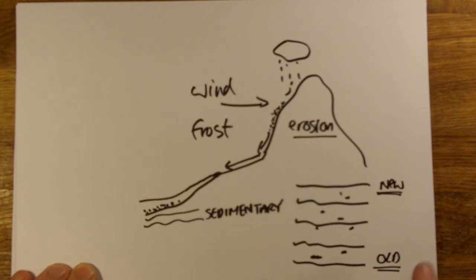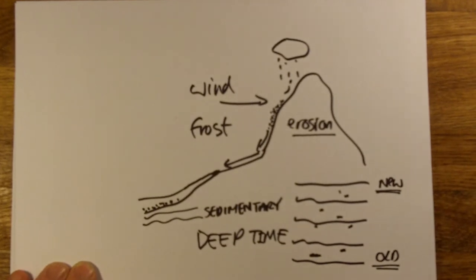This age of millions of years over which these layers of sediment formed is called deep time. The idea that these layers have been deposited over millions and millions of years is known as deep time.